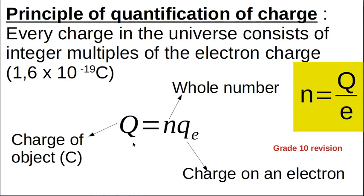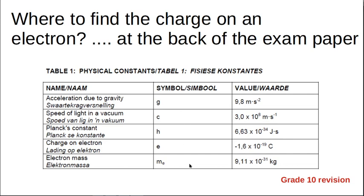So everything can be worked out, how many electrons there are in it, based on the fact that every charge in the universe is integer multiples of the electron charge. Remember charge is measured in coulombs. So here are the values here. Charge on an electron minus 1.6 times 10 to the -19 coulombs. This looks like the grade 10 data sheet because the grade 11 data sheet has got another constant on it. But remember that this is where you'll find the charge on an electron.